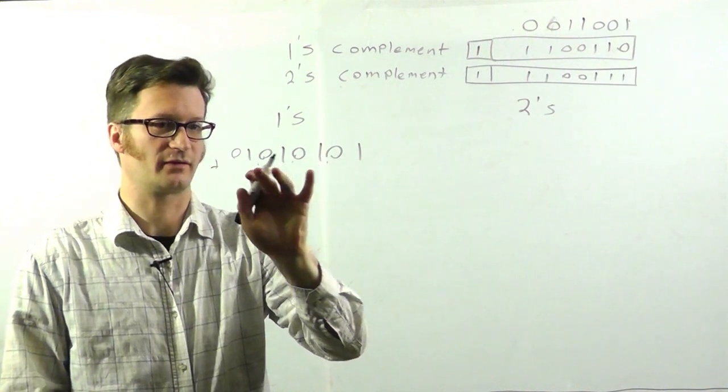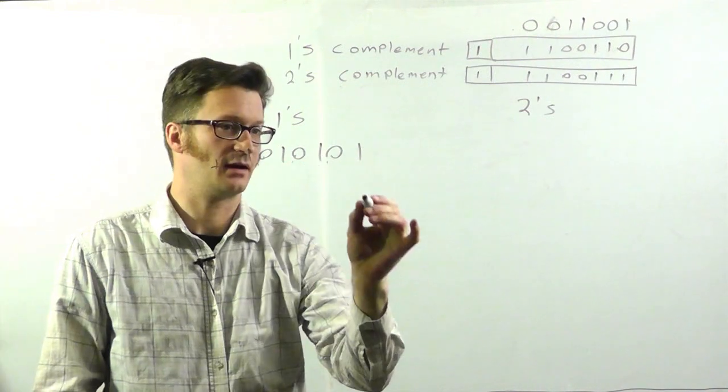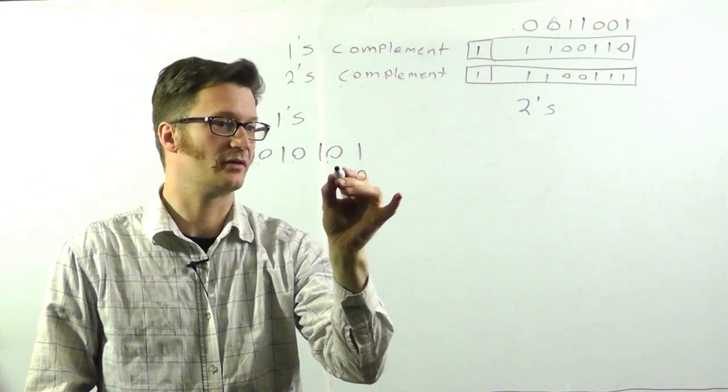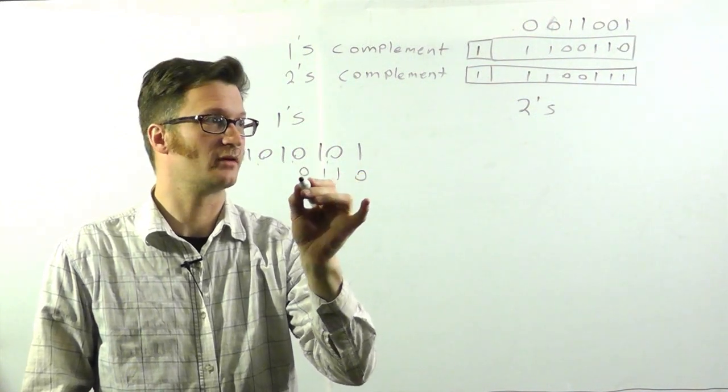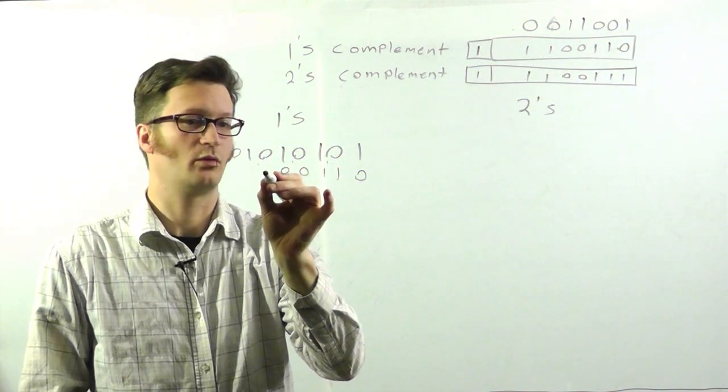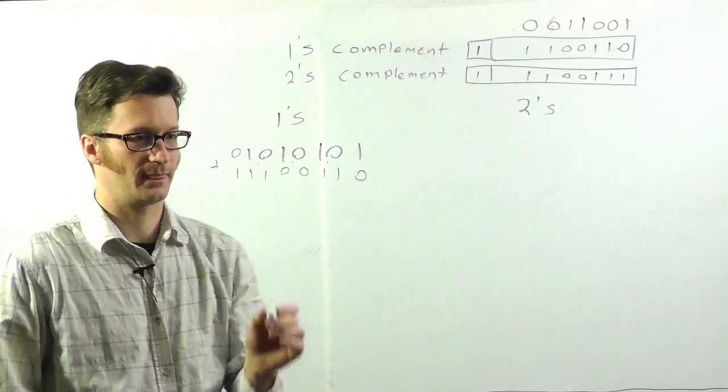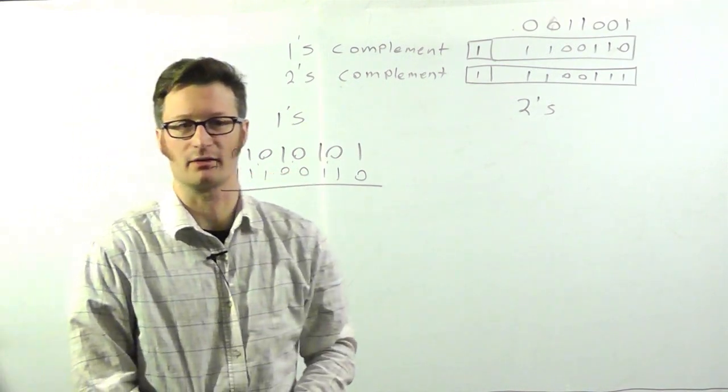2, 4, 6, 8. And then we're adding 0, 1, 1, 0, 0, 1, 1, 1. And we just add this like regular.